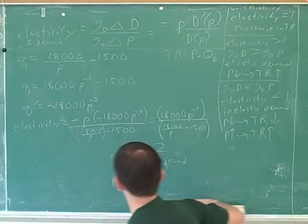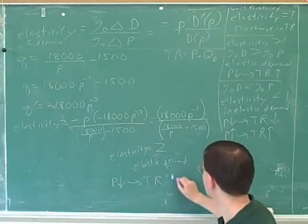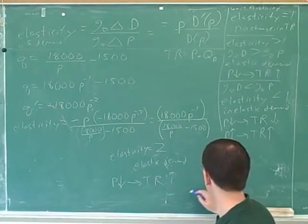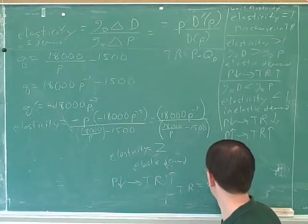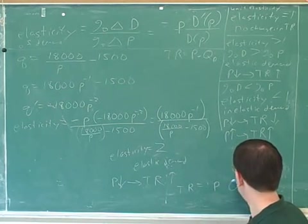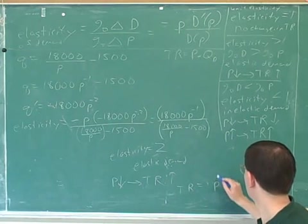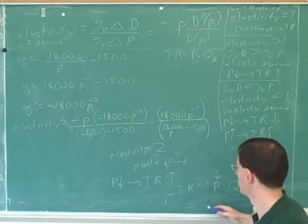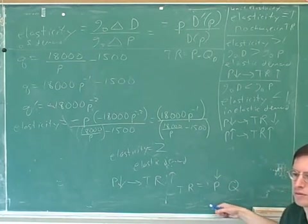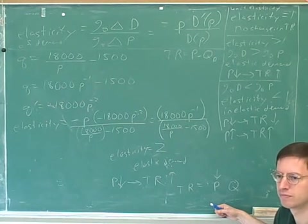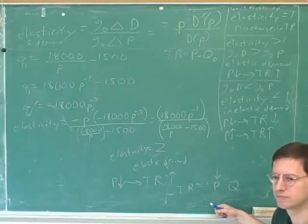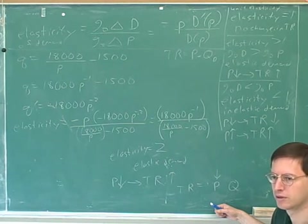When the price goes down, what will happen to the revenue? Inelastic. That's correct. And why is that? Inelastic. Because demand is going up, so you're dividing a bigger number by a small? No.